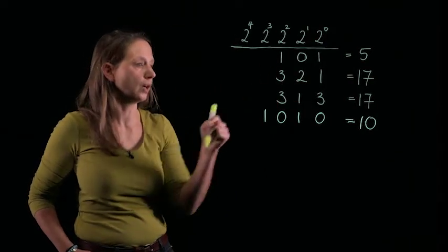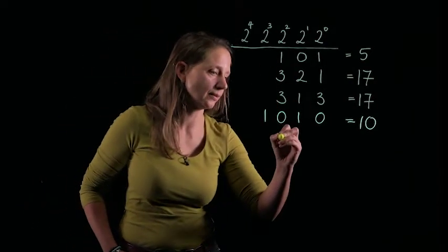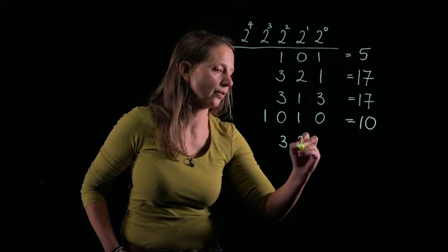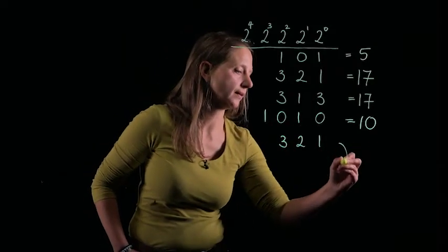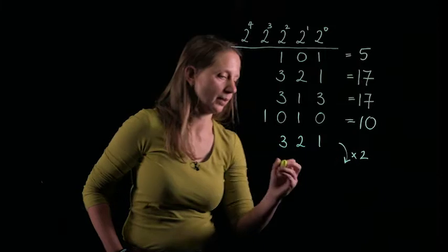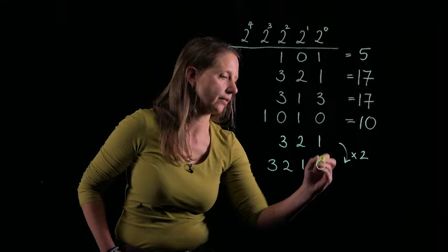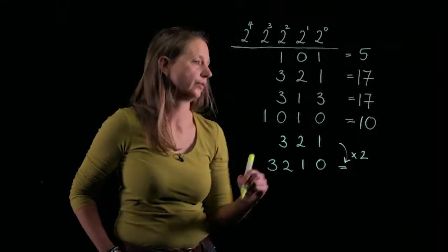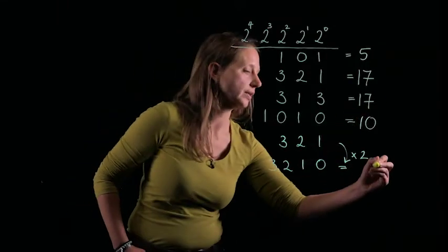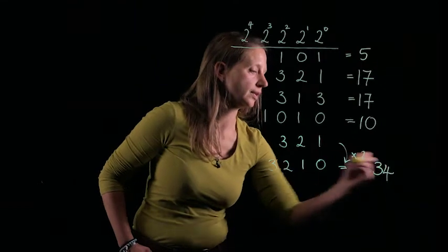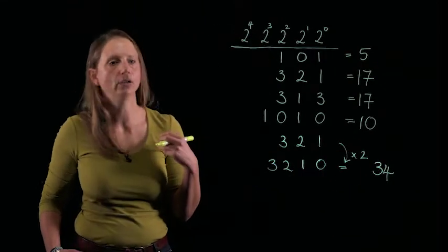Exactly the same applies to our new kind of representation. So if I start with 3, 2, 1, and I multiply it by 2, 3, 2, 1, 0, and that represents the number double 17. So that represents 34, and that will prove useful later on.